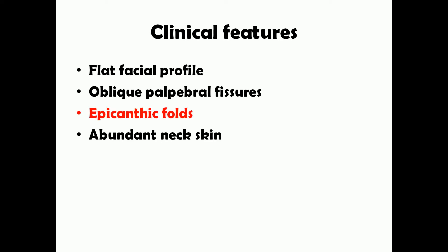Now let's talk about the clinical features of Down syndrome. Patients have a flat facial profile, oblique palpebral fissures, epicanthic folds, and abundant neck skin. They can often be identified just by looking at them. The palpebral fissure — the gap between the upper and lower eyelid — is obliquely placed, whereas in a normal person it is placed transversely.